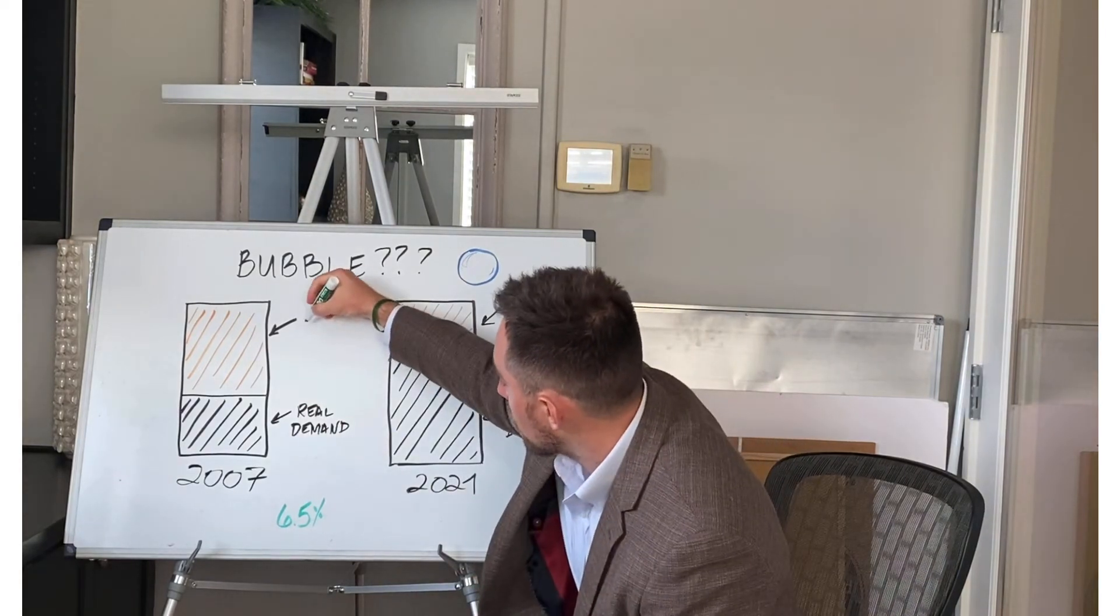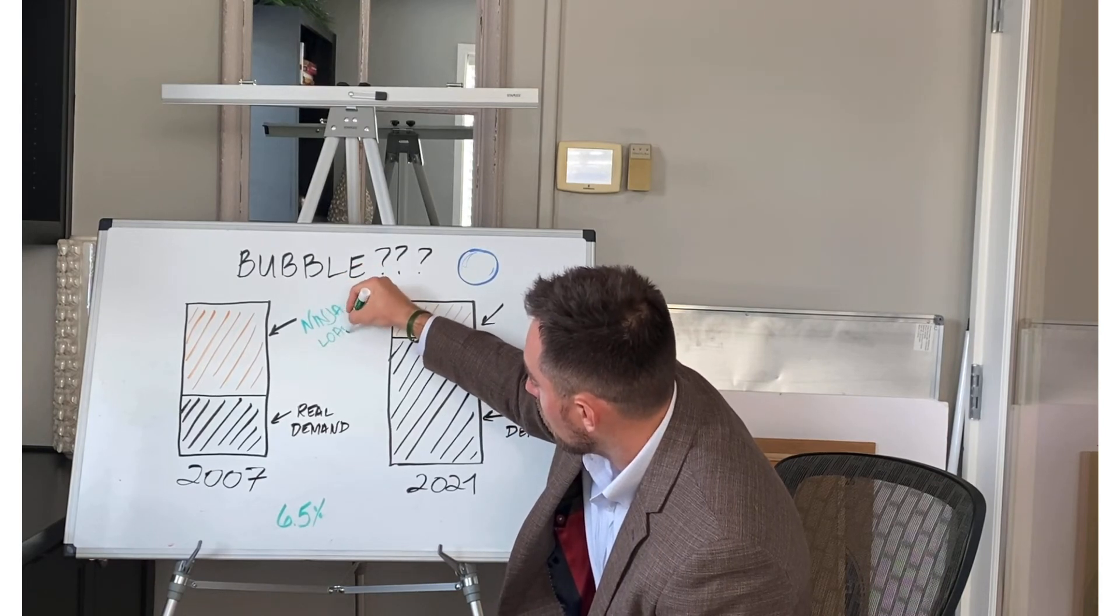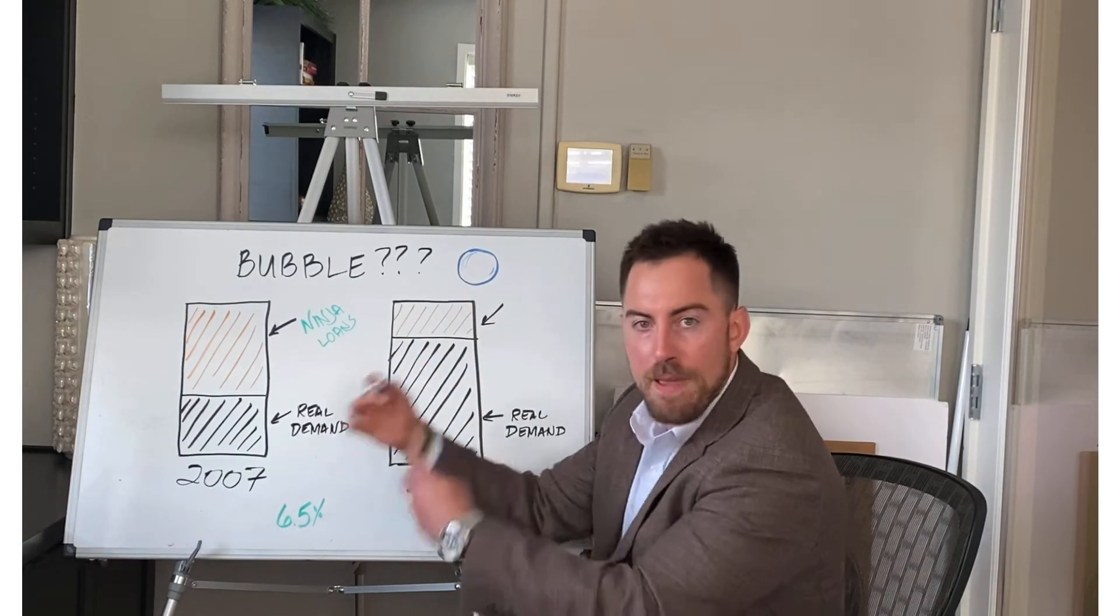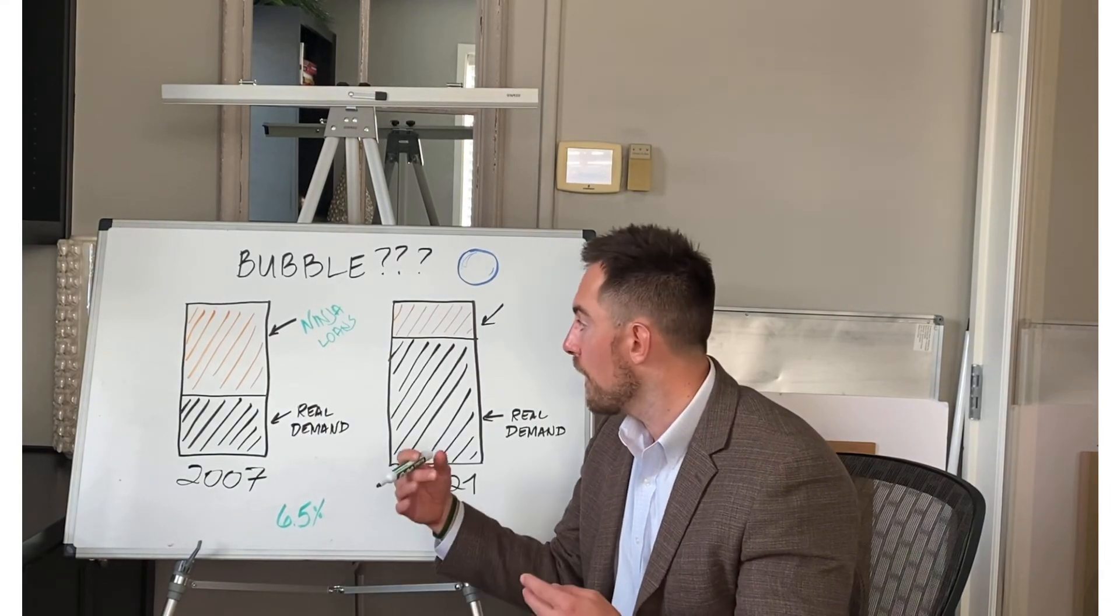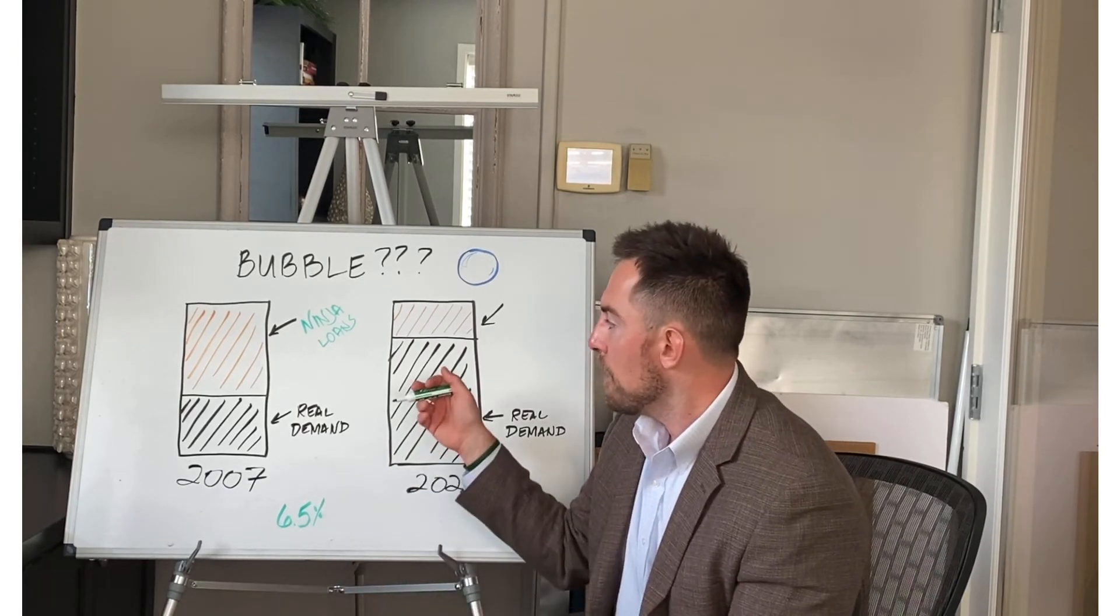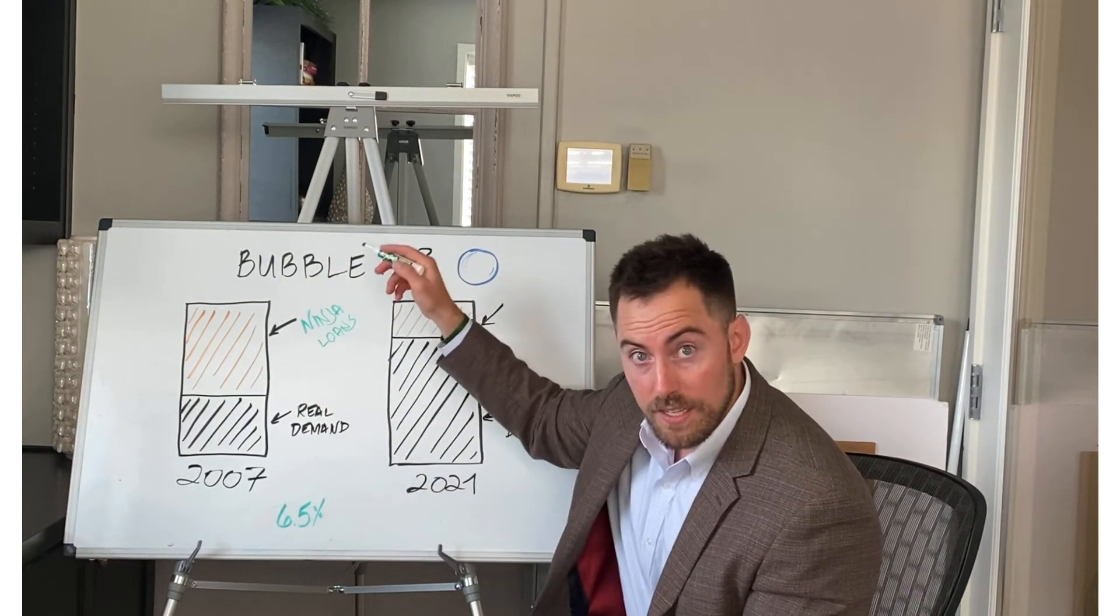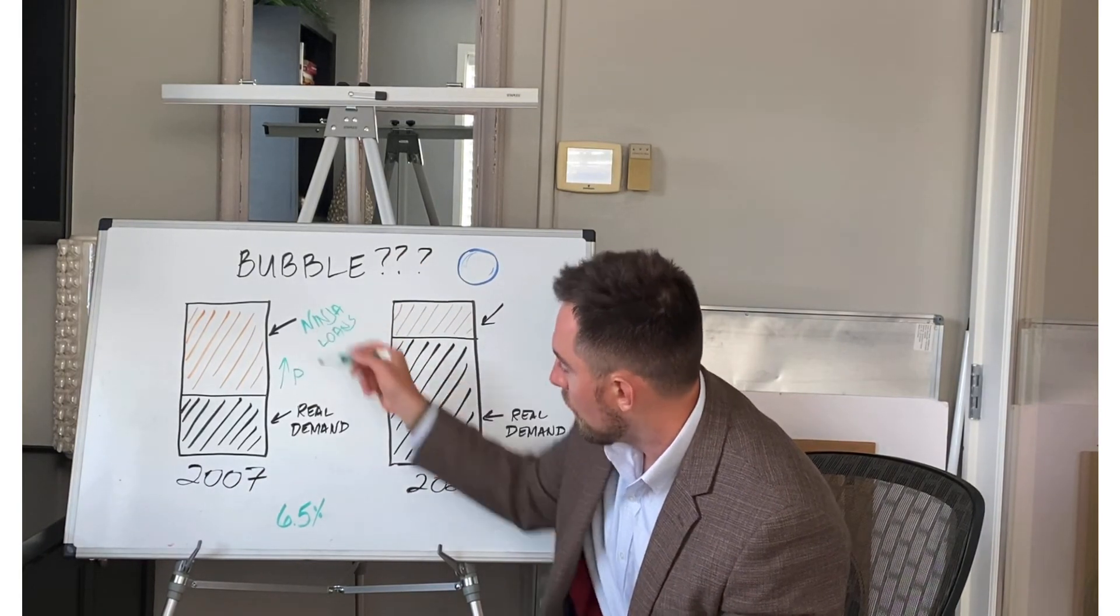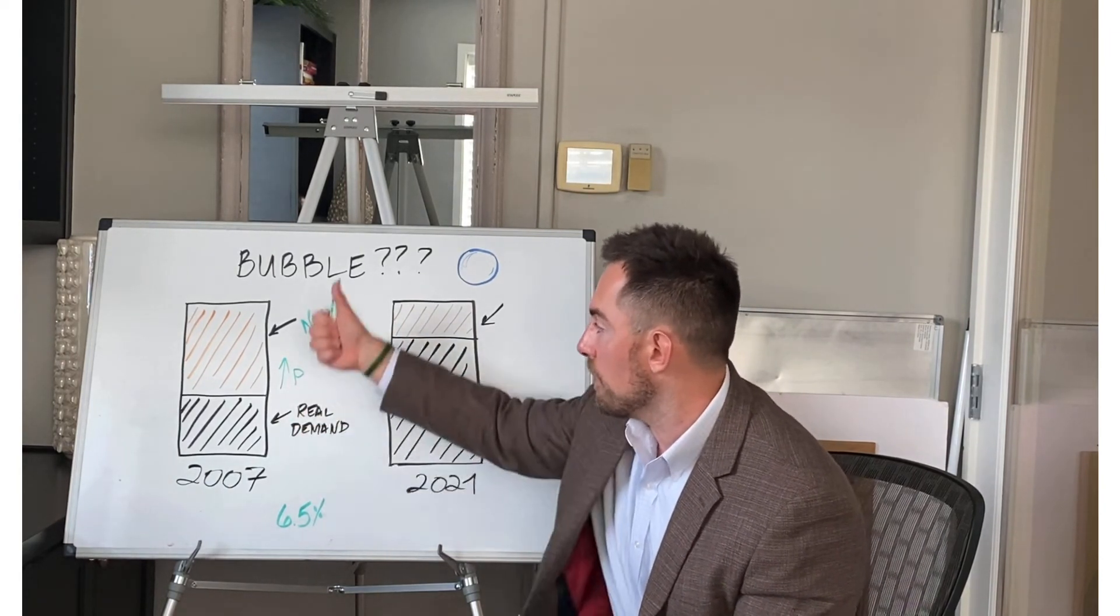So what caused that fake demand to happen? Well, you had ninja loans, no income, no job. People that fake demand. So all of a sudden people that could just get a loan, if they could fog a mirror, they could buy a home. They now are lumped into the demand for homes. So all of a sudden demand went crazy. And when demand for anything increases, price increases. So these fake people, or I should say fake bank accounts, created excess demand.